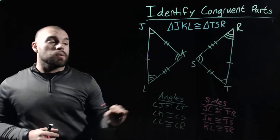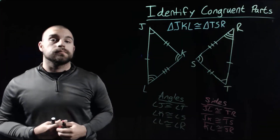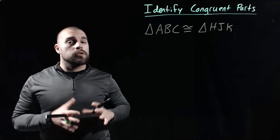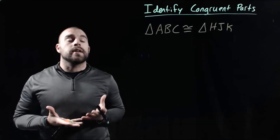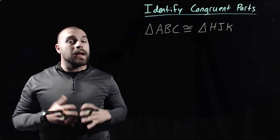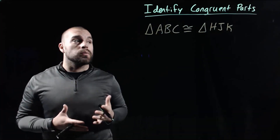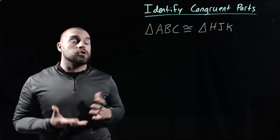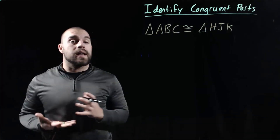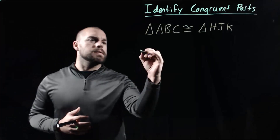Now when identifying congruent parts, we're not always going to have a diagram to look at — sometimes we've only got a congruent statement. Here we've got triangle ABC is congruent to triangle HJK. We're going to go through and identify the congruent angles and the congruent sides. Let's start off with the angles.